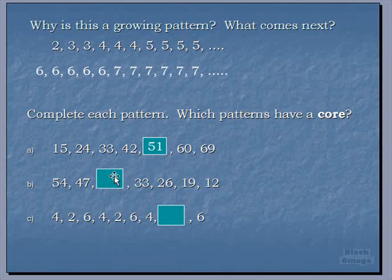Let's go on to the next one here. 54, 47, blank, 33, 26, 19, and 12. So is this a growing pattern? No. It goes down, so it's a shrinking pattern. Now, does it shrink in a predictable way? What did we have to do from 54 to 47? We had to subtract 7, so let's try doing that from 47 to get our unknown number. We subtract 7, that gives us 40.